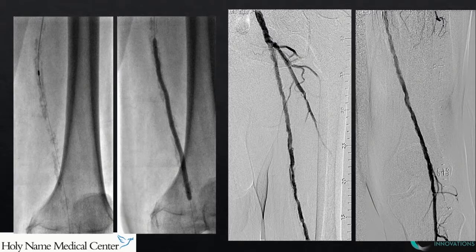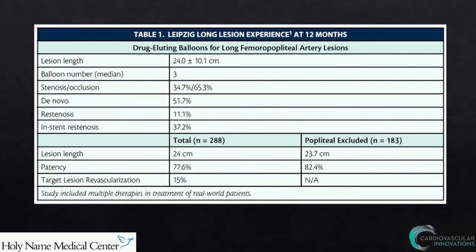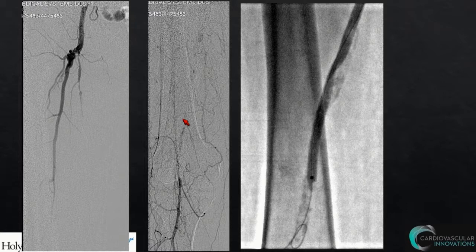We do find quite a bit of positive remodeling. And certainly if you look at the drug-eluting balloon experience for long femoral popliteal lesions — many of these intraluminal and subintimal crossings are not recognized as such — with very long lesion lengths, these patients actually do very, very well. Restenosis rates are low.